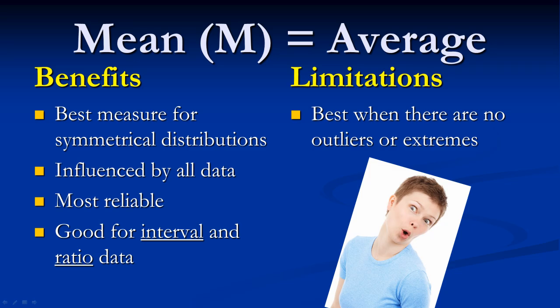The mean is the most commonly used measure because it is considered the most reliable measure of central tendency when making inferences from a sample population. However, it is only appropriate for interval and ratio level data.